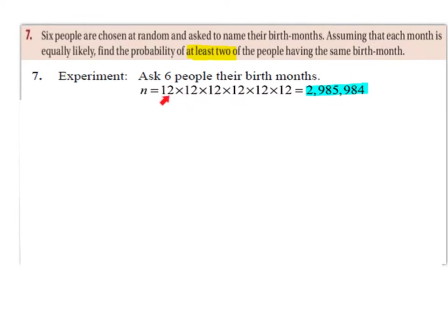Each of these 12s represents a person. So the first person's birth month could be any of the months from January to December — there are 12 possible outcomes. The second person likewise has 12 possible outcomes. The third person has 12 possible outcomes. The fourth and fifth persons each have 12 possible outcomes for their birth month.